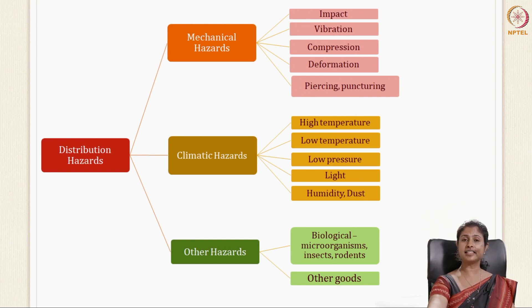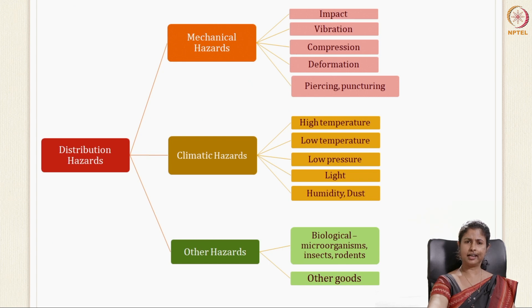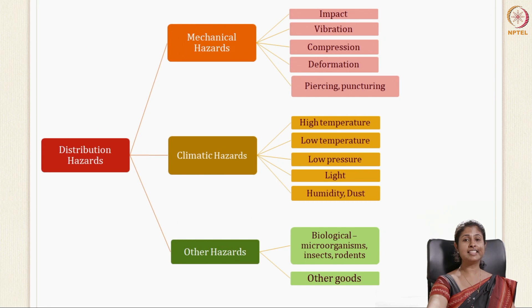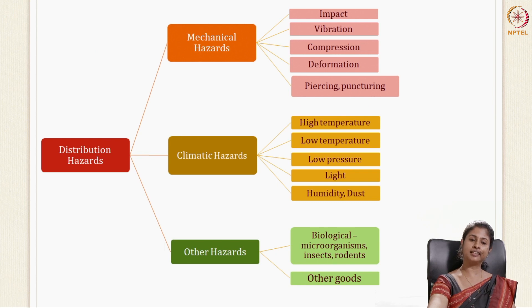Climatic hazards include high temperature, low temperature, low pressure, humidity, dust, and light. Other hazards include biological hazards such as microorganisms, insects, rodents, and other goods which come in contact with our packaging material.